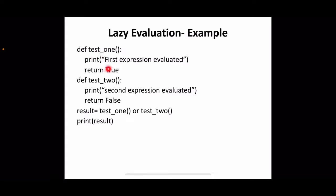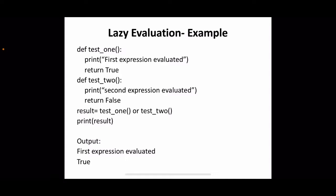In this example, test1 is the same — it prints 'first expression evaluated' — but it returns true. The second function also prints 'second expression evaluated' and returns false. The same function call is used: test1 or test2, and we print the result. You may guess that the same thing happens: first expression evaluated, then second expression evaluated, then true or false, result will be true. But if we try to execute this, the result will be only 'first expression evaluated', then true. That is the property of the OR operator.